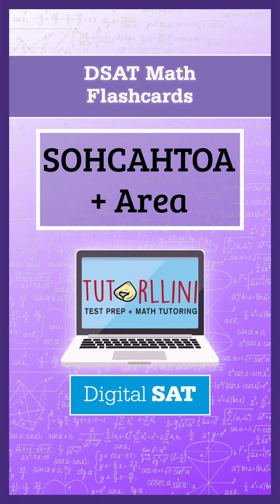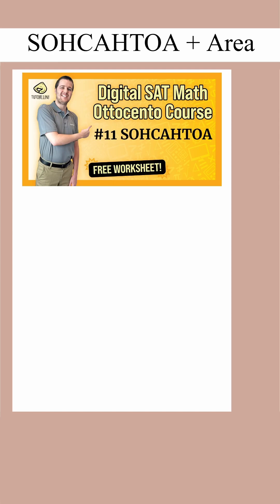Digital SAT math flashcards, SOHCAHTOA plus area. For these questions, we'll solve for a missing side using trigonometry, just like we did in Otocento number 11. Then we'll use area equals one-half base times height.